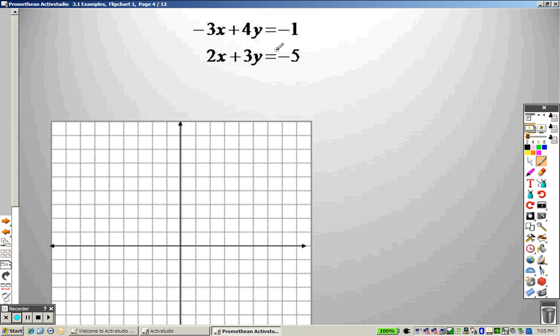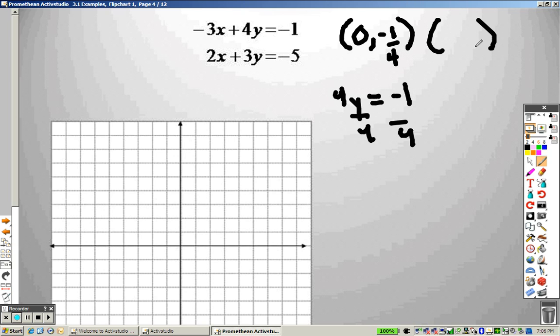For this one, we could try to solve for y, but when we do that, you realize if I divide by 4, I'm going to start to get fractions. So we're going to use a different method. I'm going to plug a 0 in for x and get an answer. So if I plug a 0 in for x, basically that's like saying I get this right here. So I divide both sides by 4, and I get negative 1 fourth.